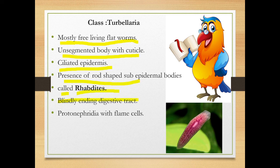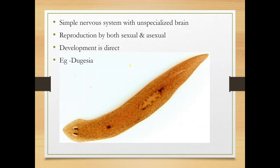There is a blindly ending digestive tract with no anus, so it ends blindly. The excretory organ is protonephridia with flame cells. The nervous system is simple with an unspecialized brain. Reproduction is sexual, and development is direct — there is no larval stage present. An example is Planaria.